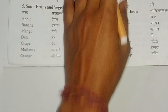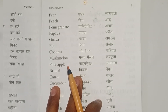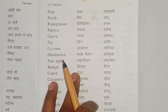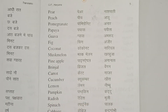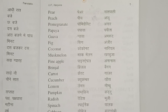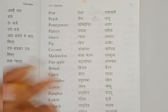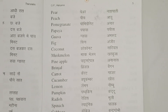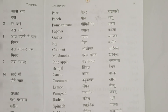Orange — Santra. Pear — Naas. Peach — Aadu. Pomegranate — I am repeating it so that you know about the pronunciation, how to pronounce it, okay.